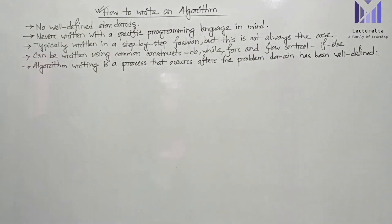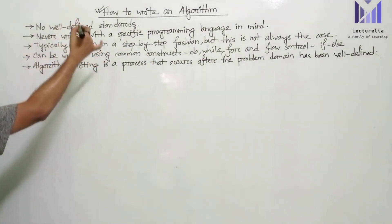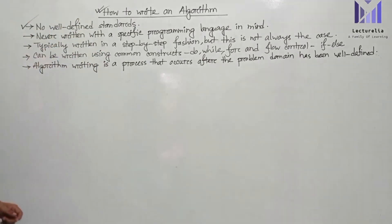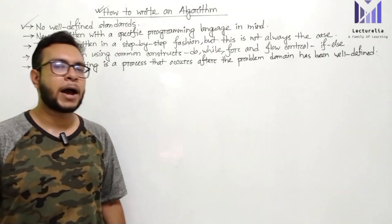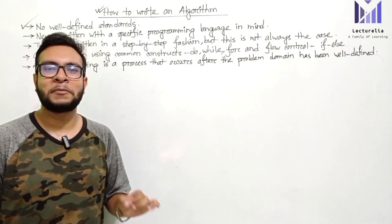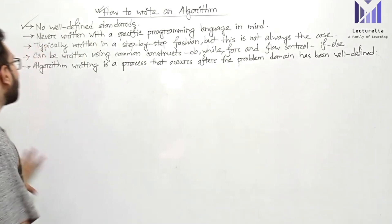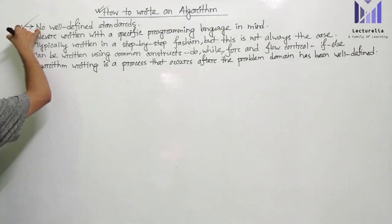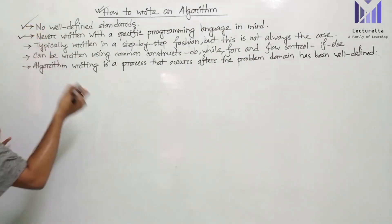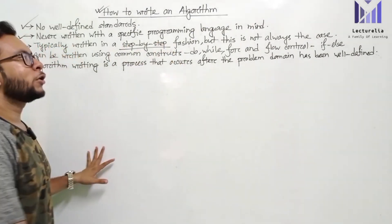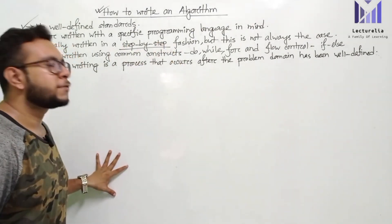An algorithm has no well-defined standard — this is an important point to note. The next point is that it is never written with a specific programming language in mind. We do not write an algorithm keeping any specific programming language in view. The next important point is that it is typically written in a step-by-step fashion.